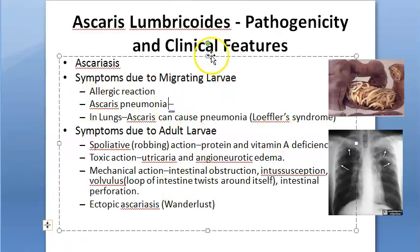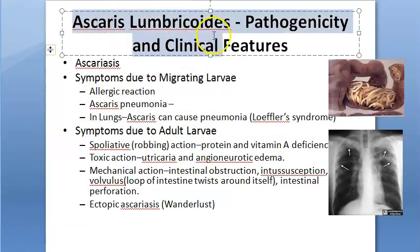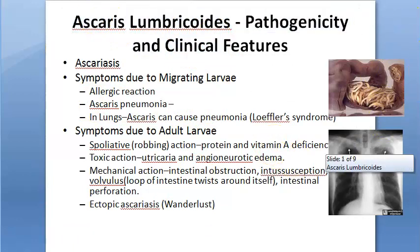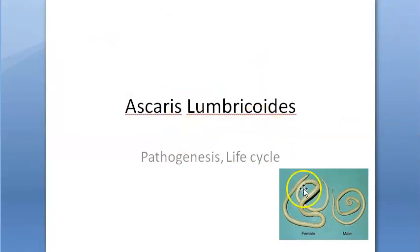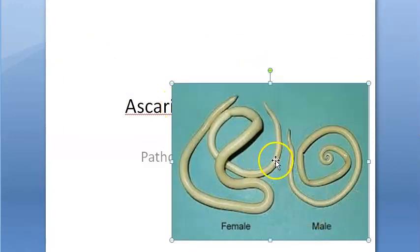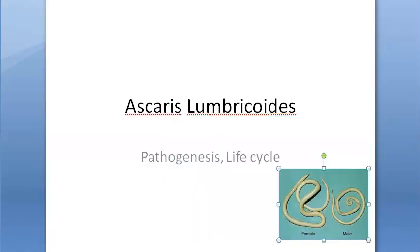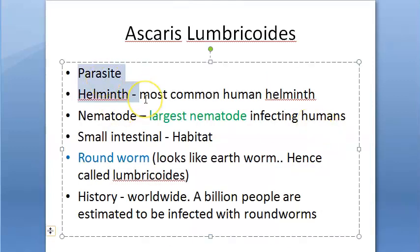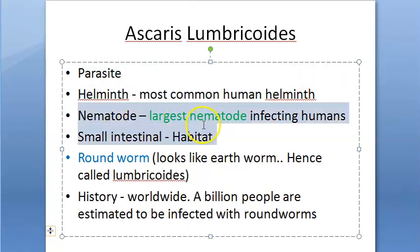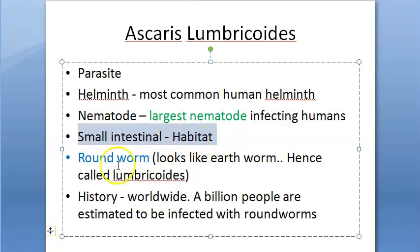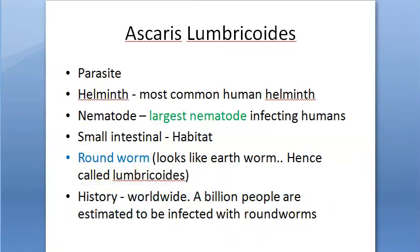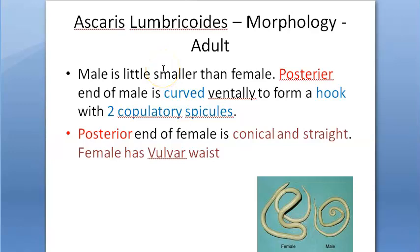In this video we look at the pathogenesis and clinical features of Ascaris lumbricoides. As a recap: Ascaris lumbricoides are round worms — they are parasites, helminths. It is the most common human helminth, classified under nematodes. It is the largest nematode infecting humans. Its habitat is the small intestine, and its common name is roundworm.